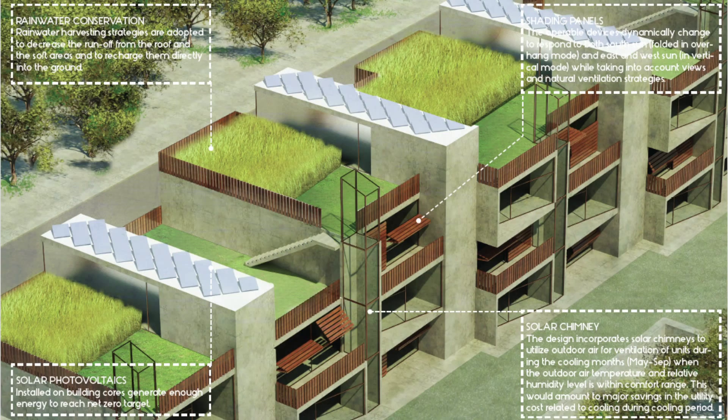We also utilized natural ventilation potential of the site. The solar chimneys were oriented to the southern facade through which we were able to ventilate the building throughout the year. And through this natural ventilation, we were able to cut off the cooling cost during the summer months, which also helped us a lot in achieving our target of net energy positive.